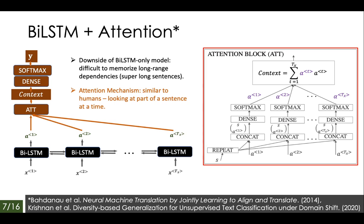We use XLMR embeddings aggregated from all 25 of its layers, which are passed through the BiLSTM plus attention model. The attention mechanism gives us a methodology similar to what humans do — looking at one part of a sentence at a time — allowing the model to pick particular words deemed important for prediction. A BiLSTM-only model has the problem of memorizing long sentences, and using attention allows us to extract these important words, making our model more explainable. Alpha represents the weight vector associated with words in a sentence, producing a context vector used for predicting label Y.